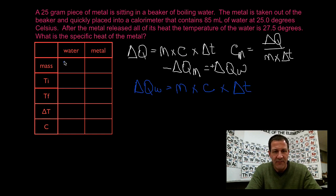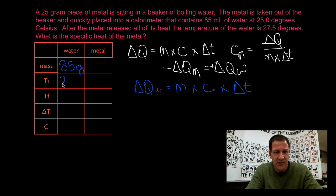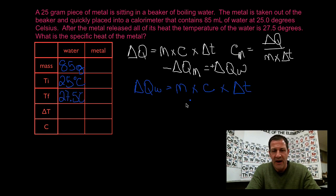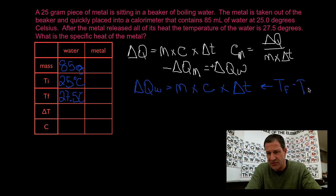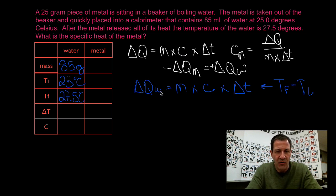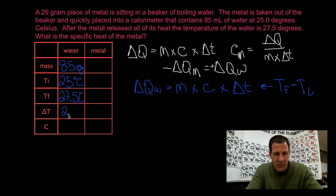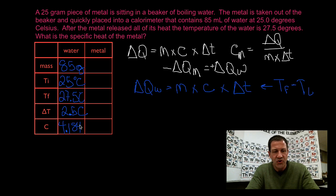How much water do we have? We're told we have 85 milliliters, so 85 milliliters is of course 85 grams. The initial temperature of the water is 25 degrees C. The final temperature is 27.5 degrees C. We have to remember that the change in temperature is always final minus initial — so 27.5 minus 25 is 2.5 degrees Celsius. The specific heat of water is 4.184 joules per gram per degree Celsius.